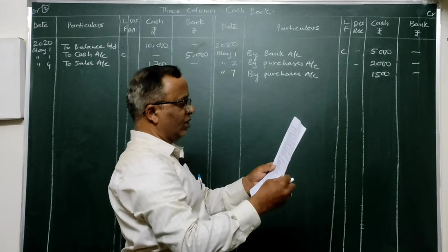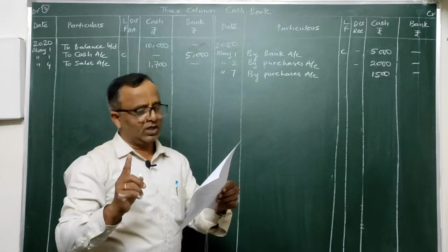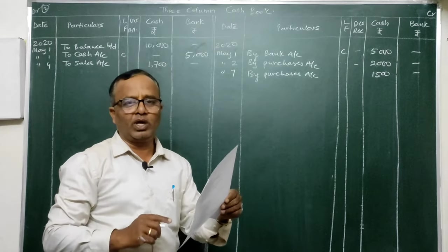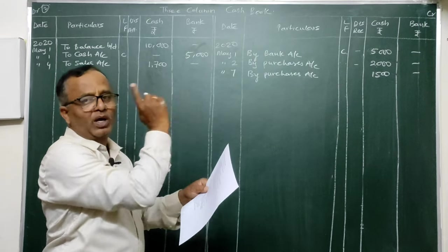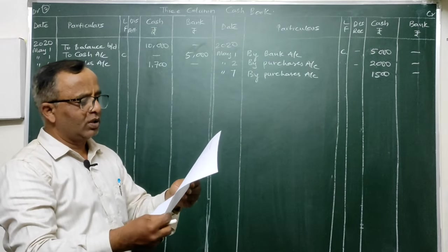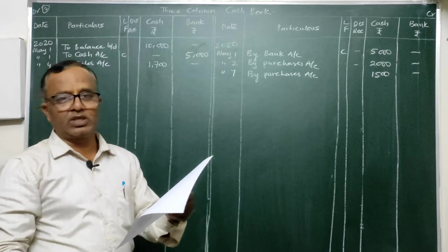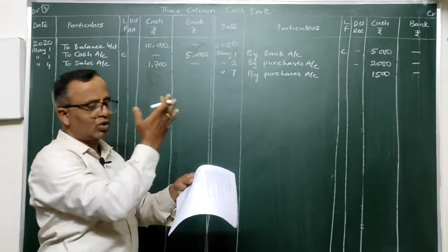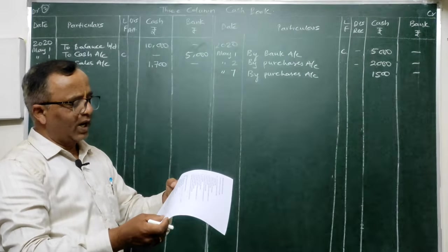On the 8th: sold goods to Raju on credit. Entry: Raju Account Dr. To Sales. This involves neither cash nor bank, so it is not posted in the cash book. Similarly, purchased goods from Gopal for 1,000 — purchased on credit — Entry: Purchase Account Dr. To Gopal. Neither cash nor bank, so no posting in the cash book. On the 12th: paid electricity charges — Entry: Electricity Charges Account Dr. To Cash — post 'By Electricity Charges' — 45 in cash column.